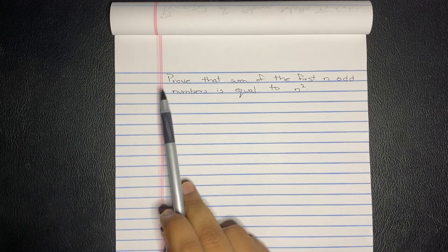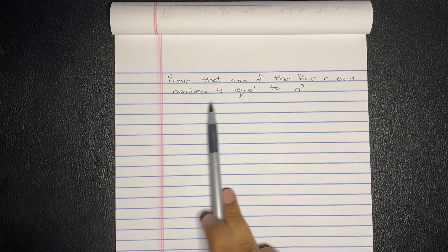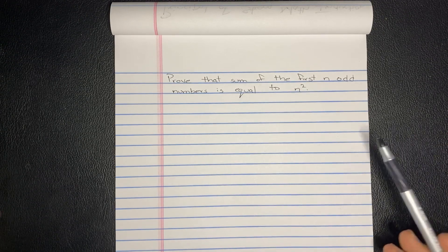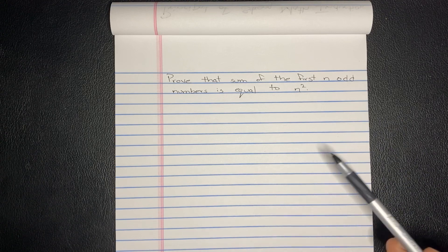Hello and welcome. Today we're going to prove that the sum of the first n odd numbers is equal to n squared. And now there are many ways to prove this, but I'm going to use the principle of strong math induction, or PSMI.